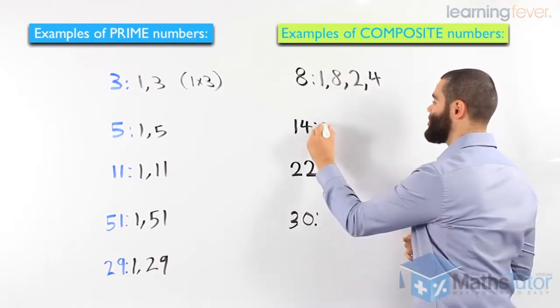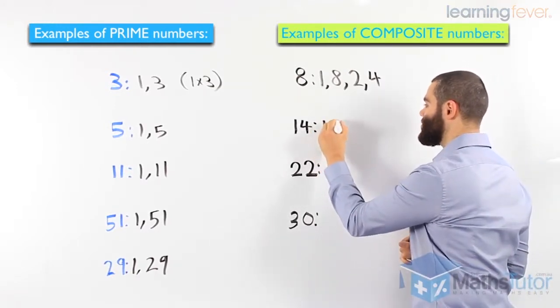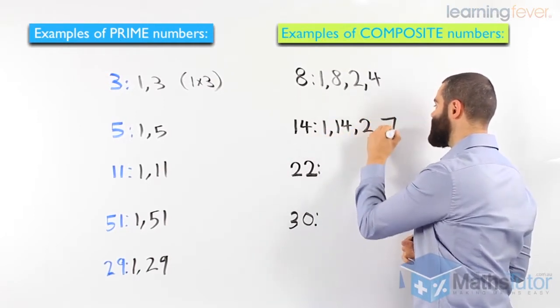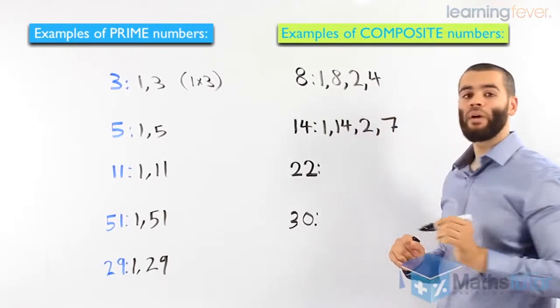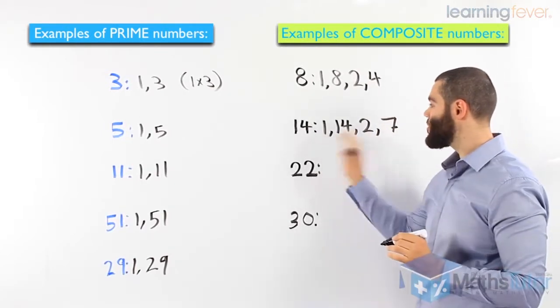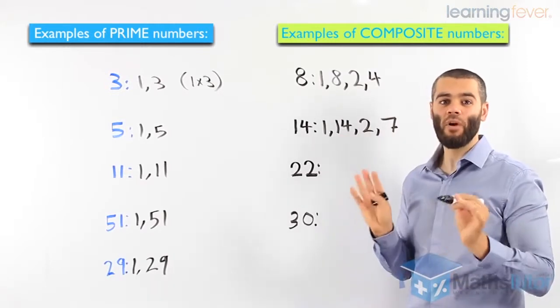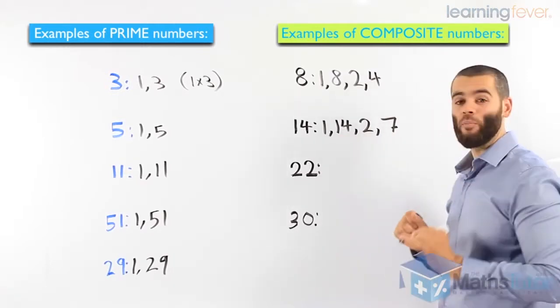14, same thing. 1 times 14 make 14. And 2 times 7 also make 14. So more than 2 factors. So straight away, more than 2 factors. That means it's not a prime number. It must be a composite number.